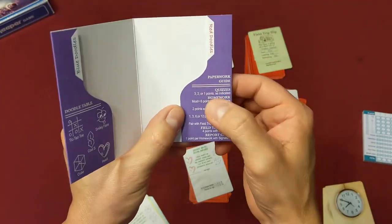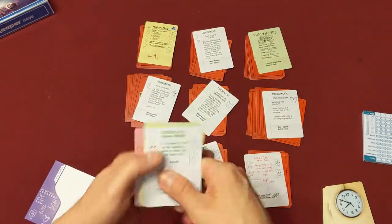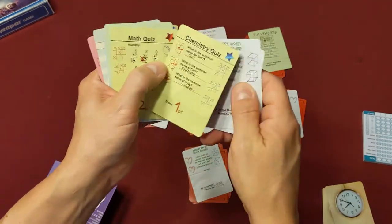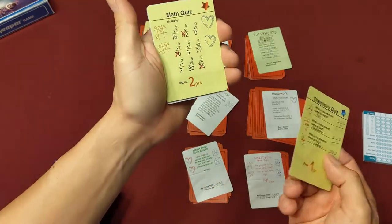So the scores are pretty easy. For quizzes you score three, two, or one points as indicated on them. So on each quiz card there is a number at the bottom. For example, this chemistry quiz here scores you one point and the math quiz scores you two points.